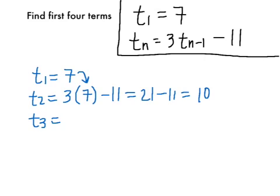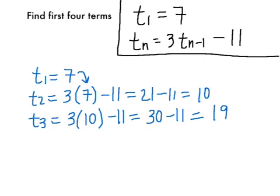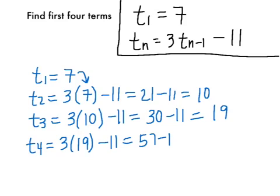For t₃, we need to take 3 times the previous term, which in this case is t₂, which we found to be 10. Subtract 11 from that, so that's 30 minus 11, so our t₃ is 19. And then our t₄, we need to do 3 times 19, and subtract 11. So there we have 57 minus 11. Our fourth term is 46.